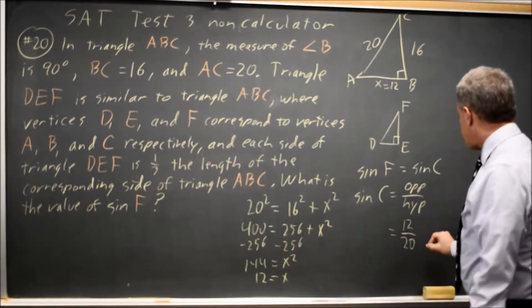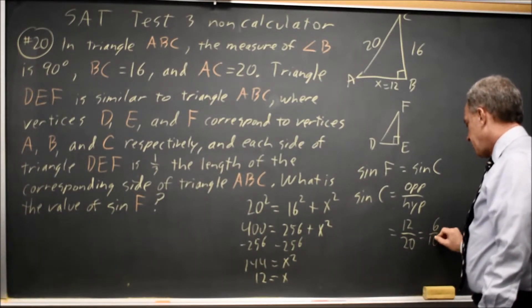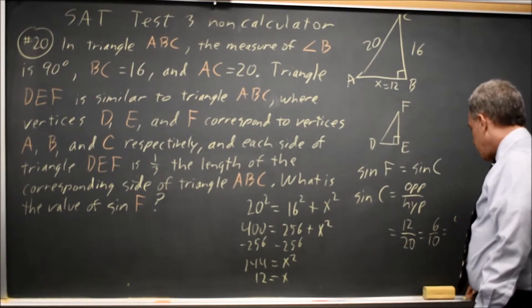So the answer is 12 over 20, which is the same as 6 over 10, or 3 over 5.